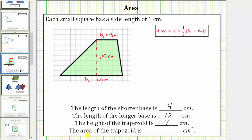Now we're asked to find the area of the trapezoid, which is the number of square centimeters that will fit inside this trapezoid. The area of a trapezoid is equal to one-half times the quantity base one plus base two times the height. So for this trapezoid, the area is equal to one-half times the quantity four centimeters plus twelve centimeters times the height, which is seven centimeters.